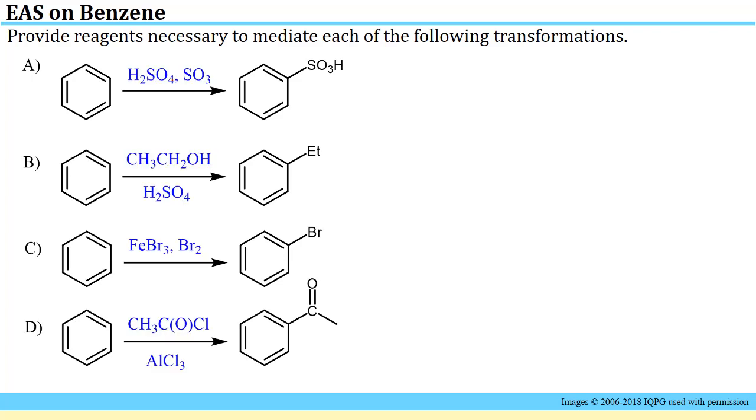Then we have the opportunity to review the different reagents. For the first one, sulfonation, you could use sulfuric acid with sulfur trioxide, that's called fuming sulfuric acid. It also works if you just use sulfuric acid. In the second case you have an ethyl group you're trying to put on, and you could do that with an alcohol with an acid, or alternatively you could use aluminum trichloride with ethyl chloride. You could generate the carbocation needed by heating ethylene with sulfuric acid to facilitate this reaction as well. In the case of bromination you could use iron or iron tribromide with bromine, and in the case of an acylation you'll want to use aluminum trichloride with the appropriate acid chloride.